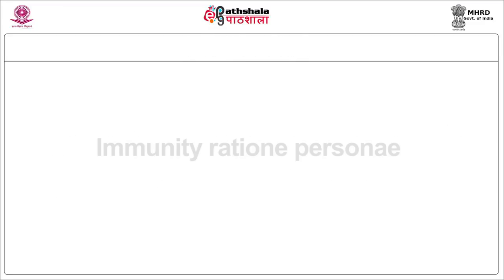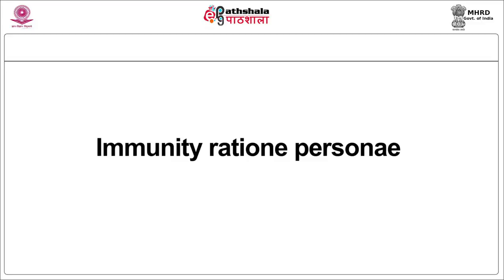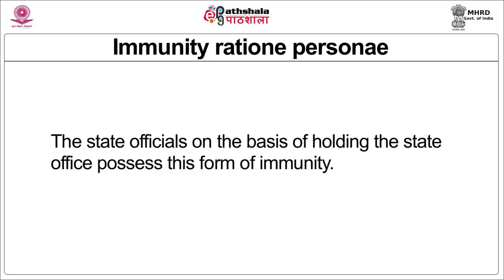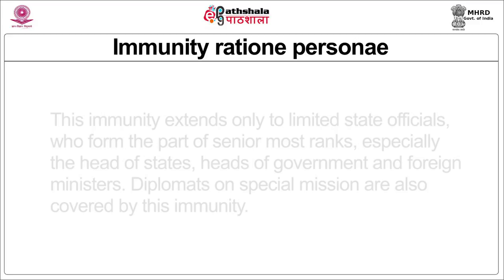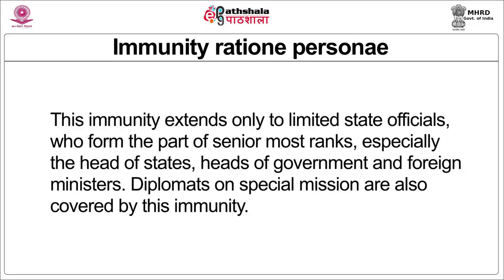Let us begin with the first kind of immunity, that is immunity ratione personae. State officials, on the basis of holding the office — that is, ex officio, by virtue of their job — possess this form of immunity. This immunity extends only to limited state officials who form part of the senior-most ranks, especially head of state, head of government, and foreign ministers — the so-called plenipotentiaries under treaty law. Diplomats on special mission are also covered by this immunity.